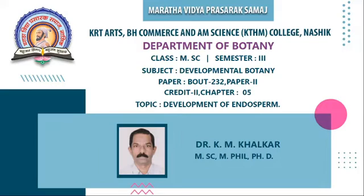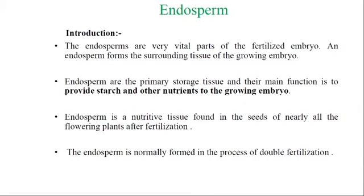This week we start the next chapter, Chapter 5, that is the development of endosperm. Here we will consider the definition of endosperm and how the endosperm is developed. The endosperm is a very vital part of the fertilized embryo and forms the surrounding tissue of the growing embryo. The endosperm is the primary storage tissue and its main function is to provide starch and other nutrients to the growing embryo.